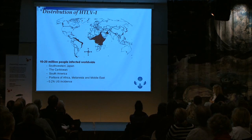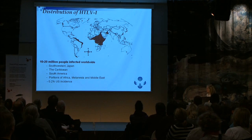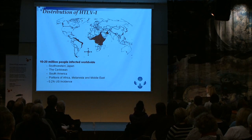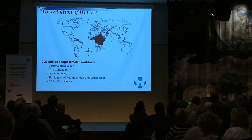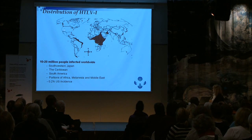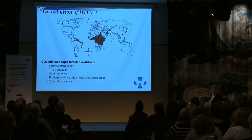Consider the distribution of HTLV-1: 10 to 20 million people are infected worldwide, but it's endemic to southwestern Japan, the Caribbean, and South America. In the late 1970s the disease was concentrated in those areas. The incidence in the US is only 0.2%, so we don't screen the blood supply because the incidence is so low — it's simply not prevalent in the US, and migration of the virus occurred in other ways throughout the continent.